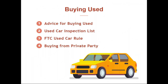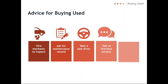When buying used, find out as much as you can about the history of the vehicle. Find out if it's been in any accidents, make sure the odometer is accurate, and check if it ever failed inspection. Get a Carfax report or check vehicle history websites. Also find out if the vehicle carries a factory warranty and if so, make sure it's transferred into your name.